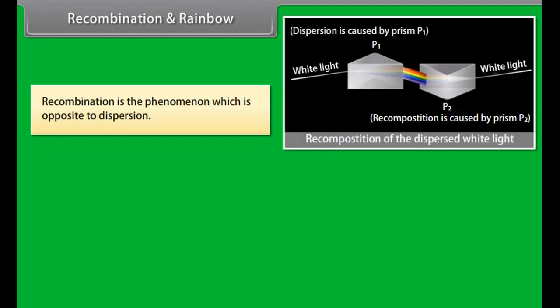Isaac Newton observed that if he keeps two glass prisms parallel to each other such that one is inverted with respect to other, then white light entering into one prism gets split into seven colors which when fall on other prism, recombine to give white light again. This is termed as recombination.